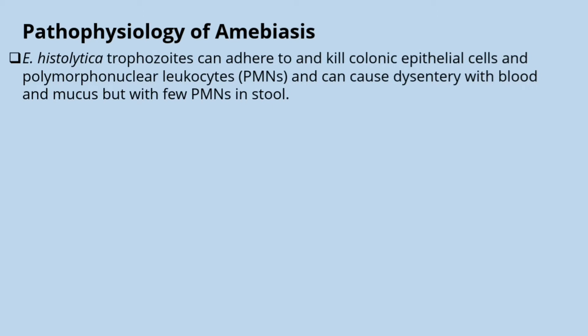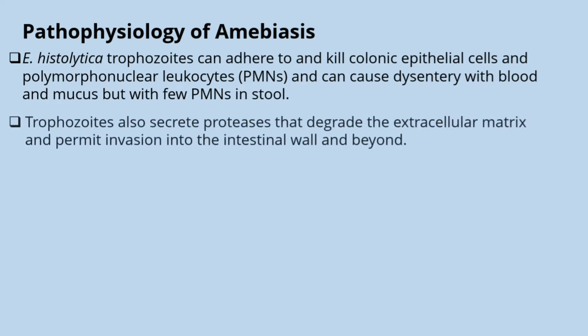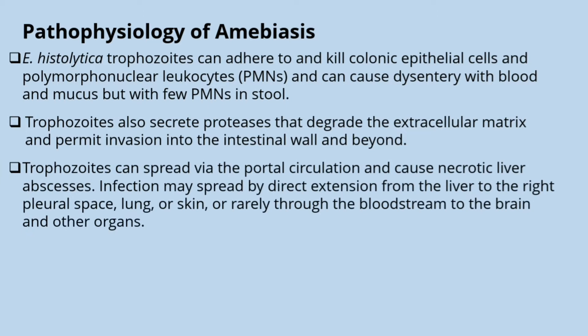Entamoeba histolytica trophozoites can adhere to and kill colonic epithelial cells and polymorphonuclear leukocytes, and can cause dysentery with blood and mucus but with few polymorphonuclear cells in the stools. The trophozoites can secrete proteases that degrade the extracellular matrix and permit invasion into the intestinal wall and beyond. The trophozoites can also spread via the portal circulation and cause necrotic liver abscesses.